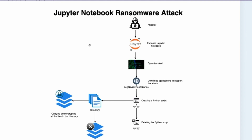This is the process of the ransomware attack. A hacker came to attack the honeypot and that's how they learned what exactly was happening. First, the attacker tries to find the exposed Jupyter Notebook, which is publicly available on the internet and quite easy to locate. Jupyter Notebook also lets you control the terminal and run shell commands — anyone who has used it knows this.